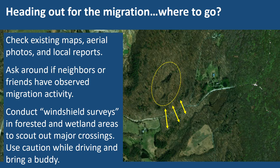You also can ask around if any of your neighbors or friends have observed migration activity. I find that when I talk about this project it usually elicits a response from somebody who says 'oh I've seen that,' so if you talk to people about it they may be able to recollect locations where they've seen lots of amphibians moving. Then you can carefully conduct what we call windshield surveys — bring a friend in the car, drive slowly, and patrol these roads looking for concentrated areas of amphibian crossings. One tip: drive with the windows down a little. If you can hear wood frogs calling, that's a good sign you have a woodland pool nearby, and it might be a good place to look more closely on the roads.